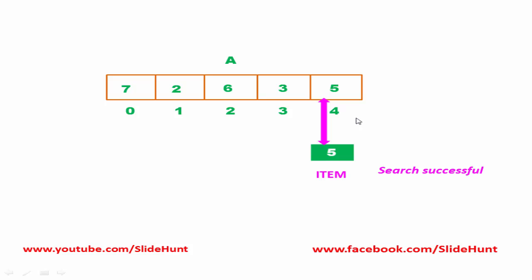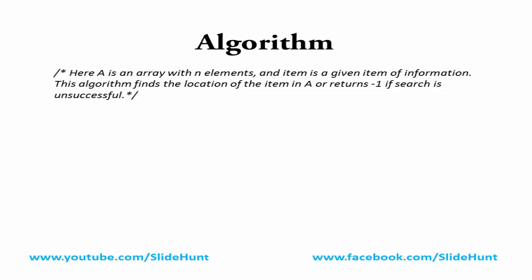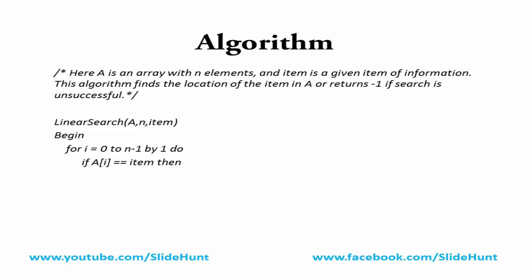Next we learn how to write the algorithm. Here A is an array with N elements and item is a given item of information. The algorithm finds the location of the item in A, or returns -1 if the search is unsuccessful. We write a loop that runs from 0 to N-1, check if the ith element equals item, and if a match is found we return i; otherwise we return -1.